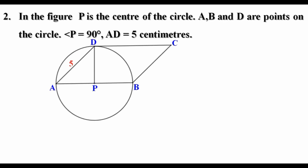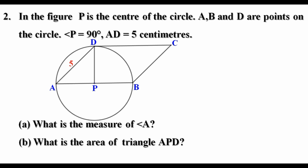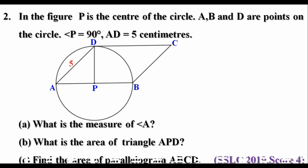Second question: in the figure, P is the center of the circle. A and B are points on the circle. Angle P equal to 90 degree. AD equal to 5 centimeters. What is the measure of angle A? What is the area of triangle APB? Find the area of parallelogram ABCD. It is a question from the SSLC examination 2019 and the score is 4.